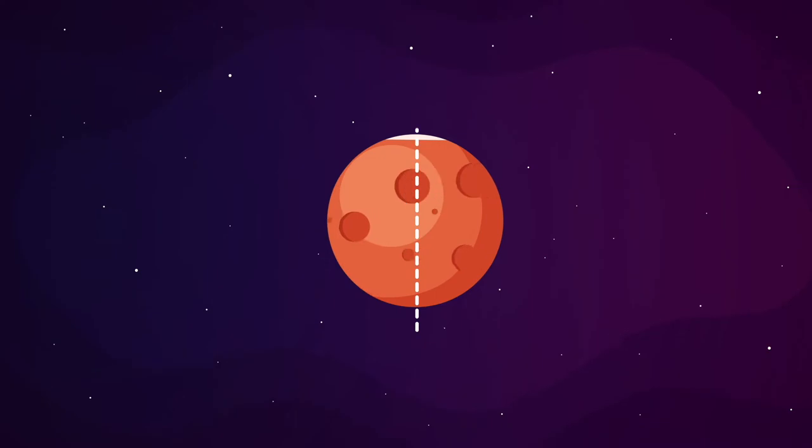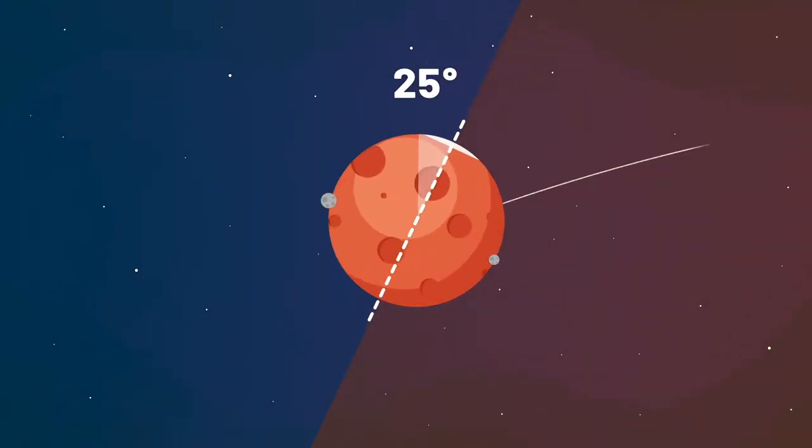Just like neighboring Earth, Mars is tilted on its axis by around 25 degrees, allowing the planet to experience seasons.